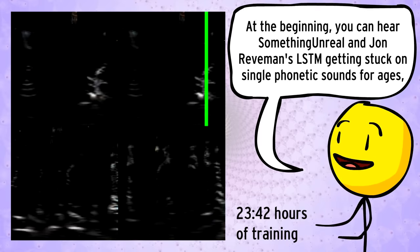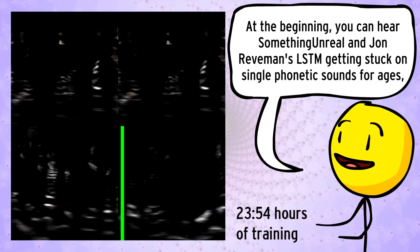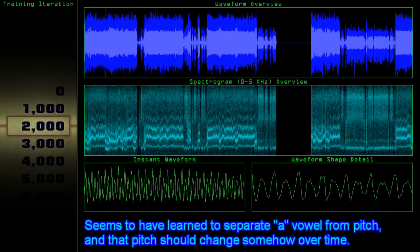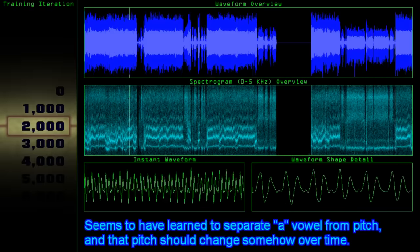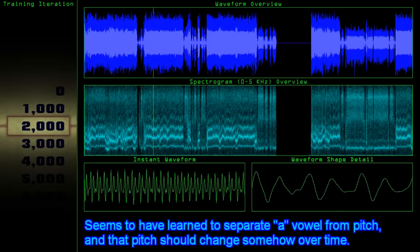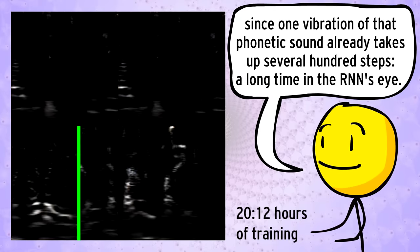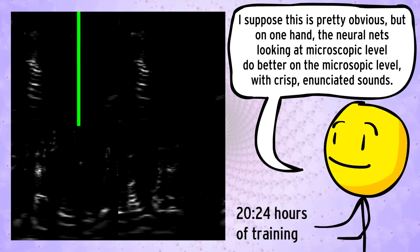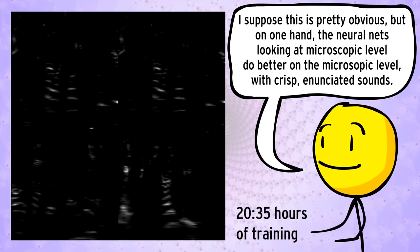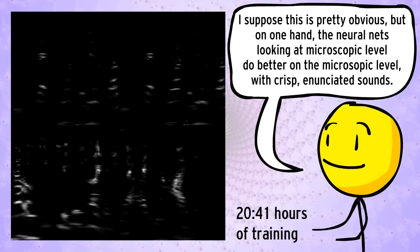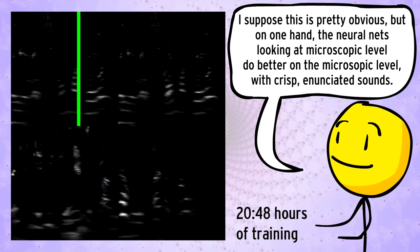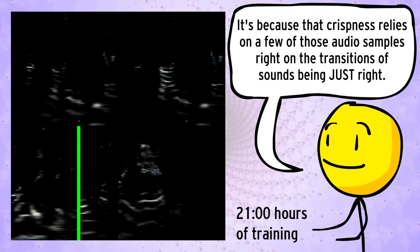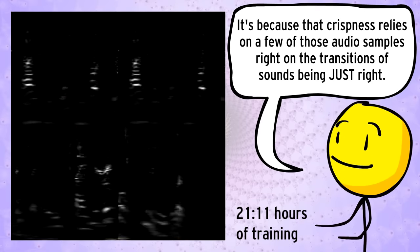At the beginning, you can hear Something Unreal and John Reeveman's LSTM getting stuck on single phonetic sounds for ages. Since one vibration in that phonetic sound already takes up several hundred steps, a long time in the RNN's eye. I suppose this is pretty obvious, but on one hand, the neural nets looking at the microscopic level do better on the microscopic level with crisp enunciated sounds. It's because that crispness relies on a few of those audio samples right on the transitions of sounds being just right.